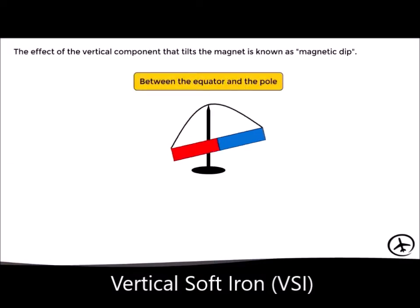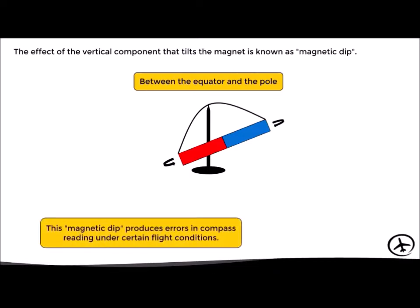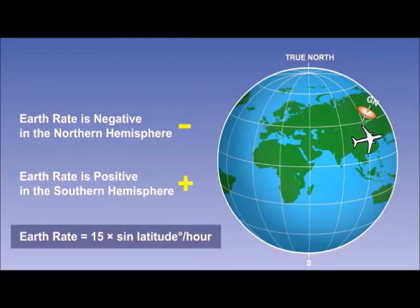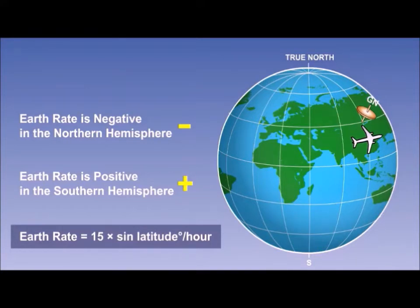At any point between the equator and one of the poles, the magnet will tilt due to the vertical component of the magnetic field, and although the compass can still rotate horizontally, this tilting will produce errors in compass indication under certain flight conditions. Compass dynamic deviation equals minus (VSI + HHI). It is the DRC deviation due to vertical soft iron and horizontal hard iron in aircraft motion. When we calculate, we compute the error for transport wander separately and add or subtract it to the equation for total wander.